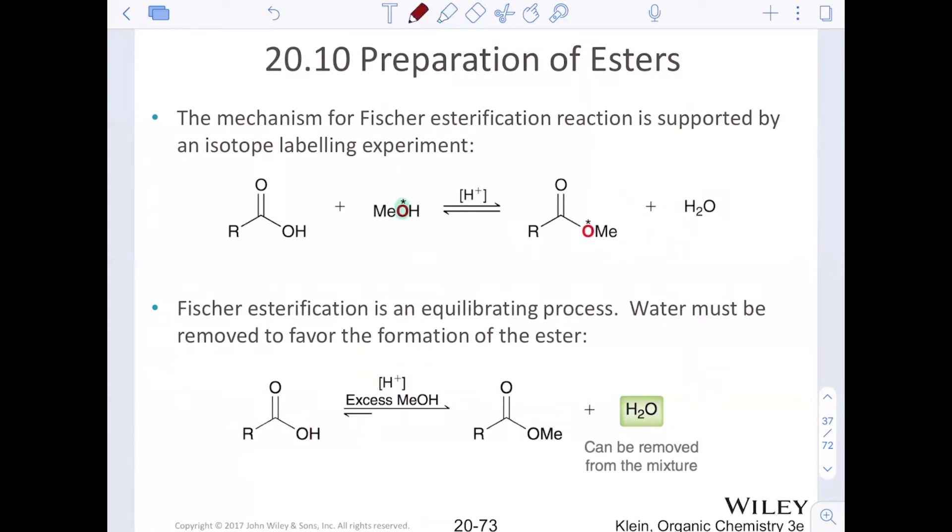The mechanism for Fischer esterification is supported by isotopic labeling. There is a great way to understand why this mechanism works. It's because there is a radio label of the alcohol that can be done. That radio label of the alcohol oxygen is then found on the resulting ester. Think about isotopic labeling as creating a little tag on our methanol reagent, and then seeing at the end of the day, where did that little tag go? Because the oxygen is incorporated into the ester structure. That's how we have been able to prove this mechanism, and that water was kicked out. This oxygen right here becomes this oxygen right here. Fischer esterification is an equilibrium process. Water must be removed to favor the formation of the ester. What that means is that we can actually do the reverse process. Take an ester and react it with H3O plus, and you'll get a carboxylic acid.